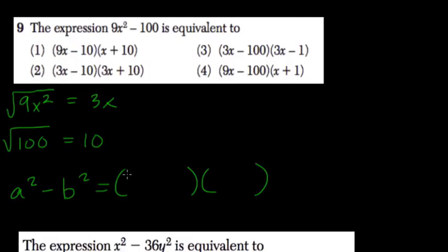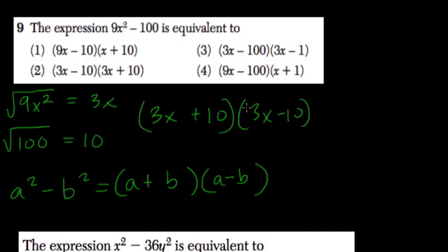We take the square root of each term, so if it was a² and b², we'd have a, b, a, b, and then we just add and subtract. So here we're going to have 3x plus 10 times 3x minus 10. Nice and quick there. Choice two.